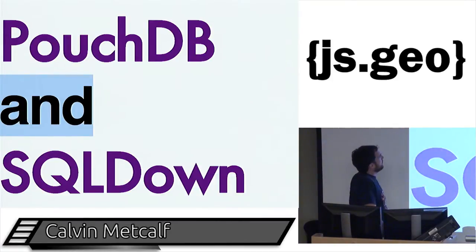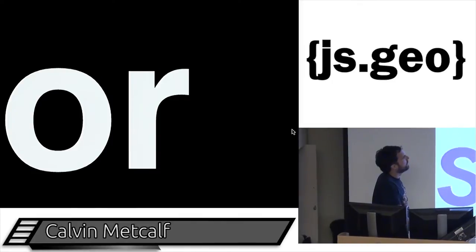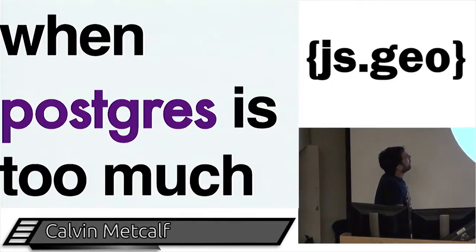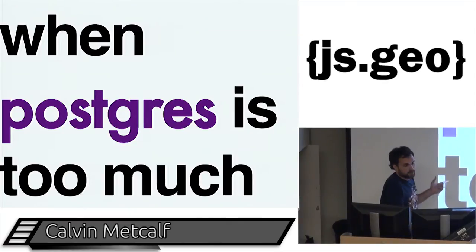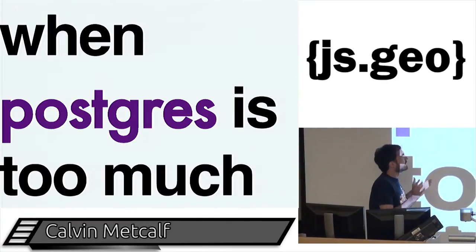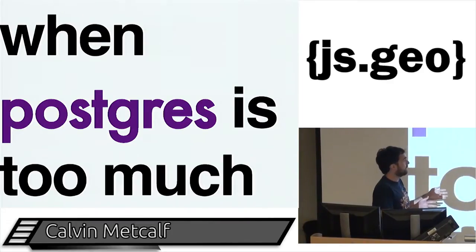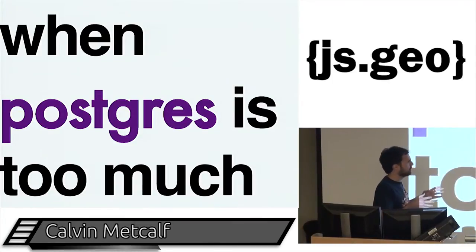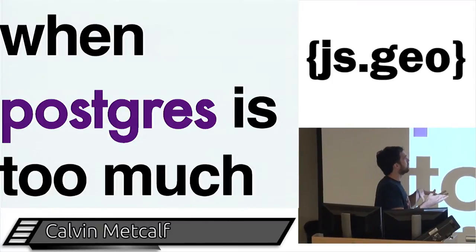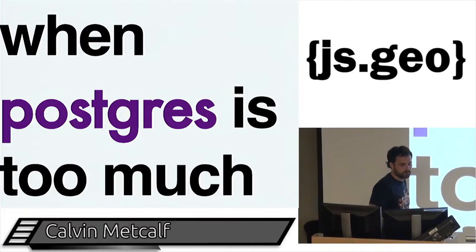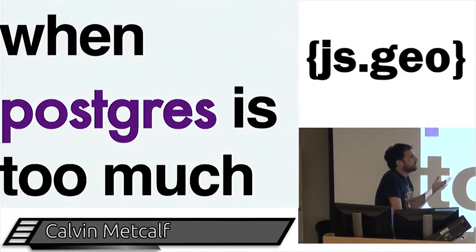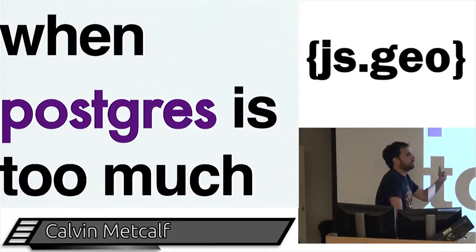So it's called PouchDB and SQLdown — I understand the DB and the SQL. Or: 'when Postgres is too much.' Postgres is hands down the best database. It's the best SQL one and the best JSON database if you have to do queries. But sometimes Postgres is a little much — if you just want to store stuff locally or do something you can use in the browser.